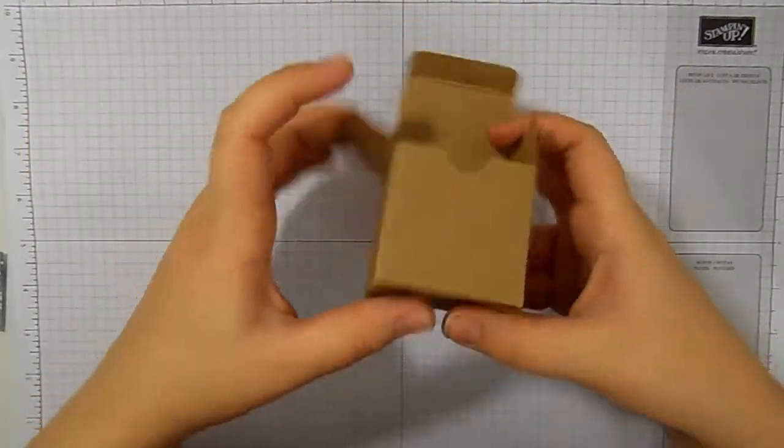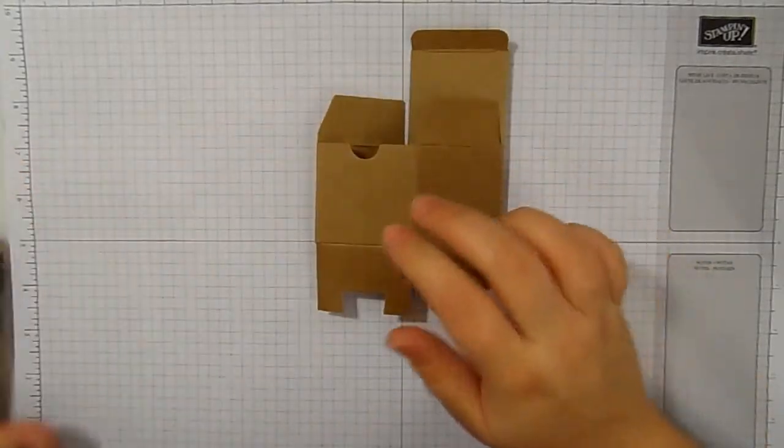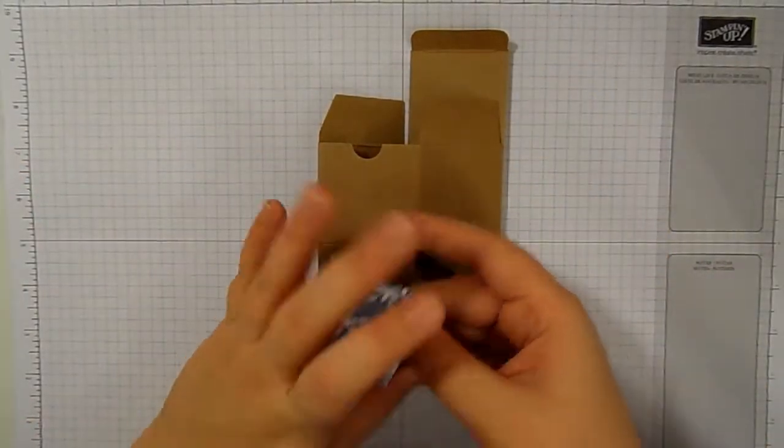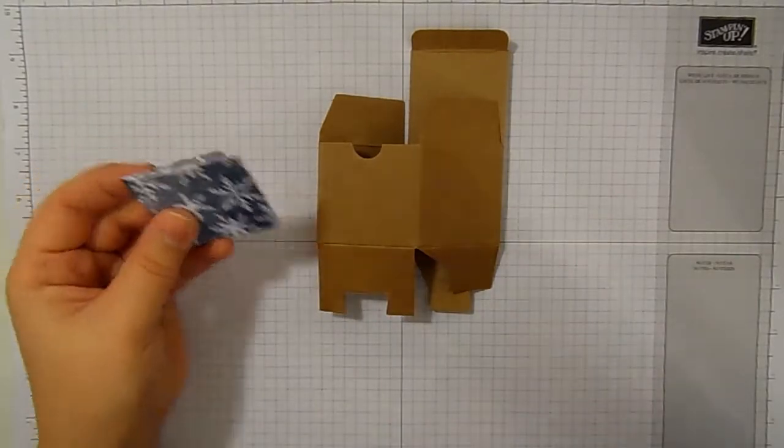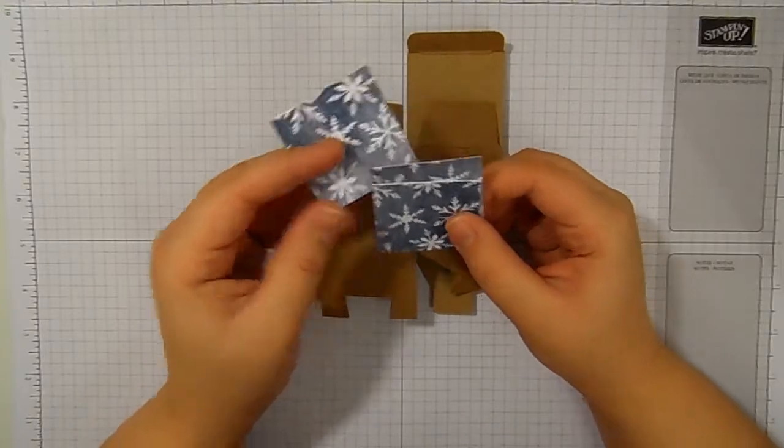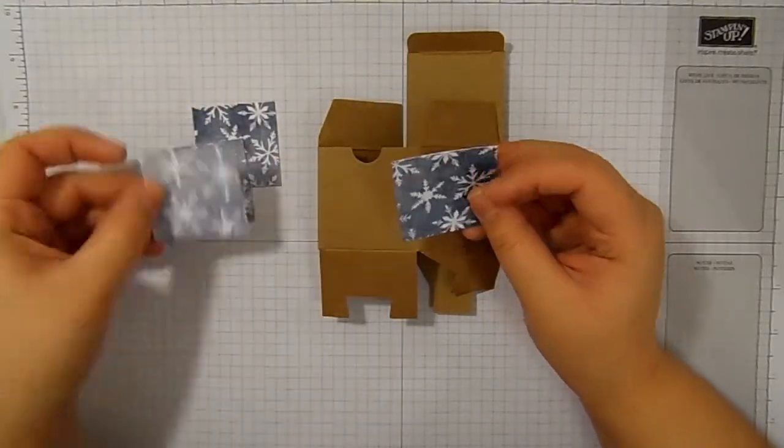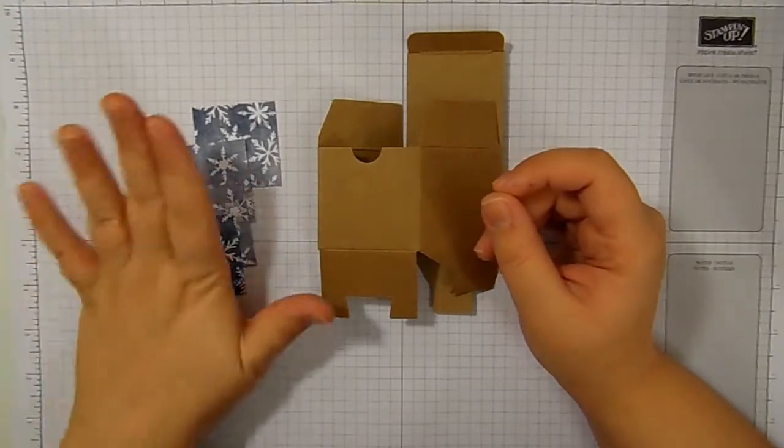So I'm going to take it all apart again now I've shown how to put it together, to put our DSP on. I have used the Season of Cheer Designer Series paper. And you need four pieces for each box that measure one and three quarter inches by one and three quarter inches or four point five centimeters by four point five centimeters.